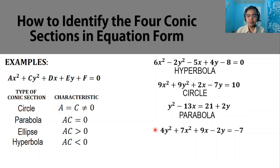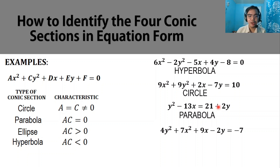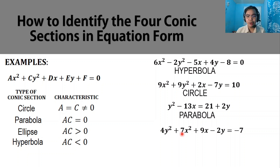Last example: 4y squared plus 7x squared plus 9x minus 2y equals negative 7. The value of a is 7 and c is 4. They are not the same, so this is not a circle. Multiplying 7 times 4 gives positive 28, which is a positive number. When we multiply a and c and get a positive number, the equation is an ellipse.